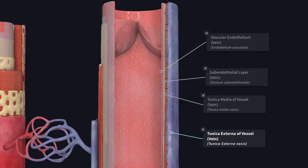In some large veins, for example the inferior vena cava, the adventitia contains a considerable amount of elastic and muscle fibers that run predominantly in a longitudinal direction. These fibers facilitate elongation and shortening of the vena cava with respiration. This is also facilitated by the fact that the collagen fibers in the adventitia form a meshwork that spirals around the vessel.